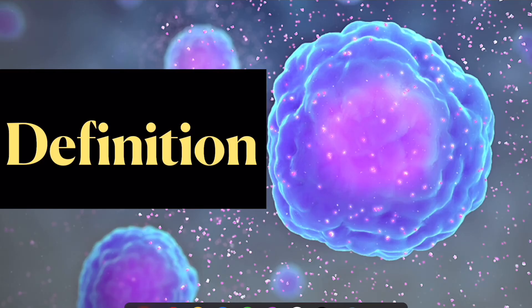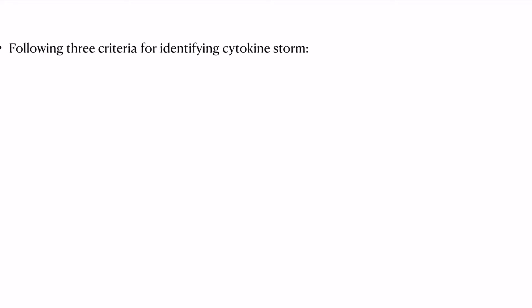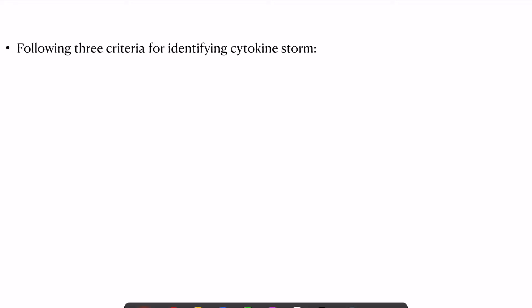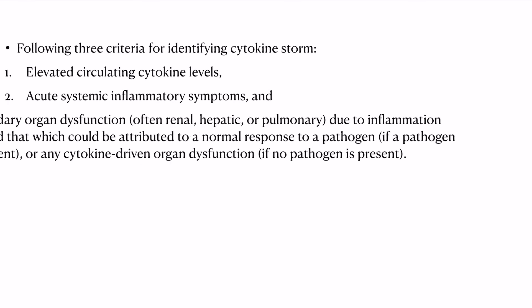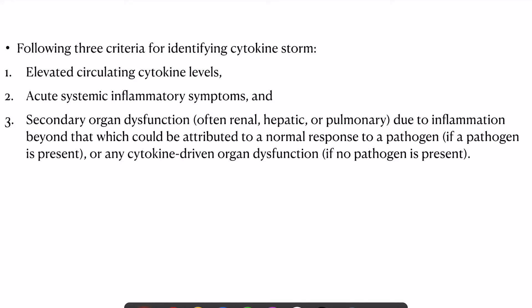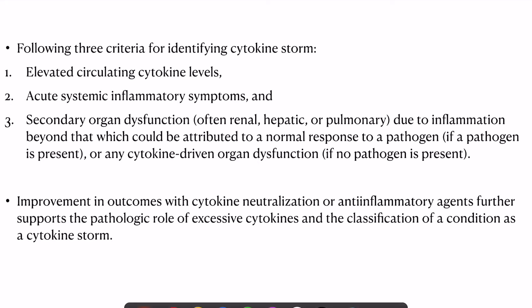There is currently no universally accepted definition of cytokine storm. An attempt has been made to find a definition that can be used systematically and uniformly. Three proposed criteria are: elevated circulating cytokine levels; acute systemic inflammatory symptoms; and secondary organ damage beyond the normal response to a pathogen, or entirely cytokine-driven in absence of a pathogen. A response to specific anti-inflammatory agents can support the diagnosis, though it is not required.